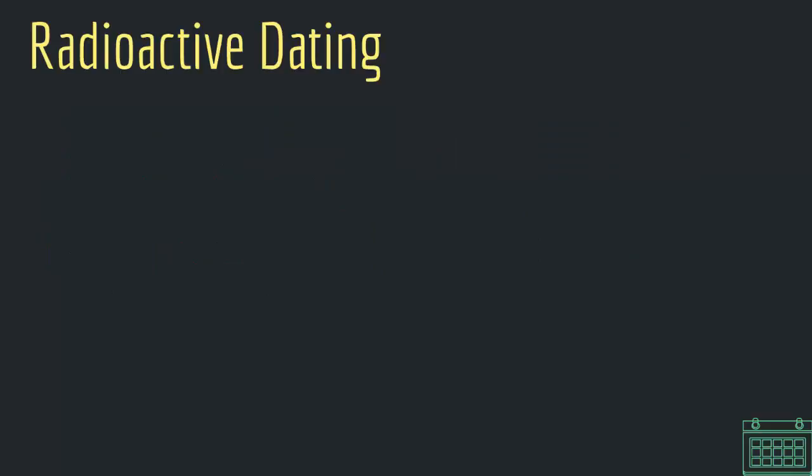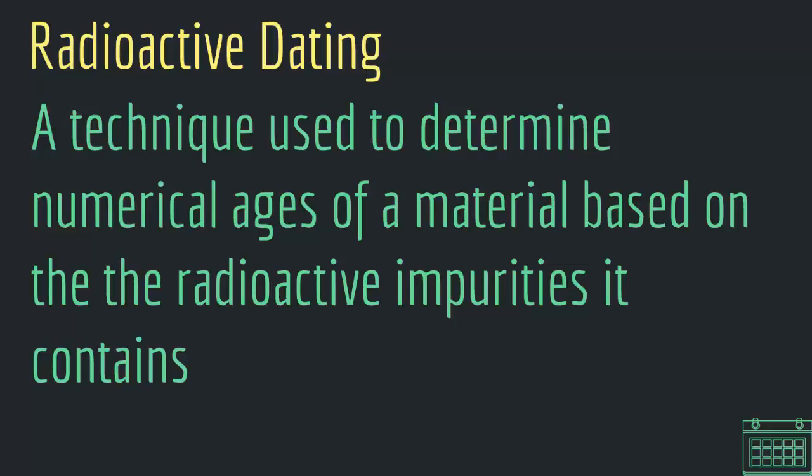So how do we do that? Well, we have techniques in order to get a numerical age of a geological feature or a rock, a mineral or a fossil. We cannot ask it and say how old are you and the thing will reply to us. We have to use techniques and that technique is radioactive dating. So what is radioactive dating? Well, radioactive dating is a technique used to determine numerical ages of a material based on the radioactive impurities it contains.